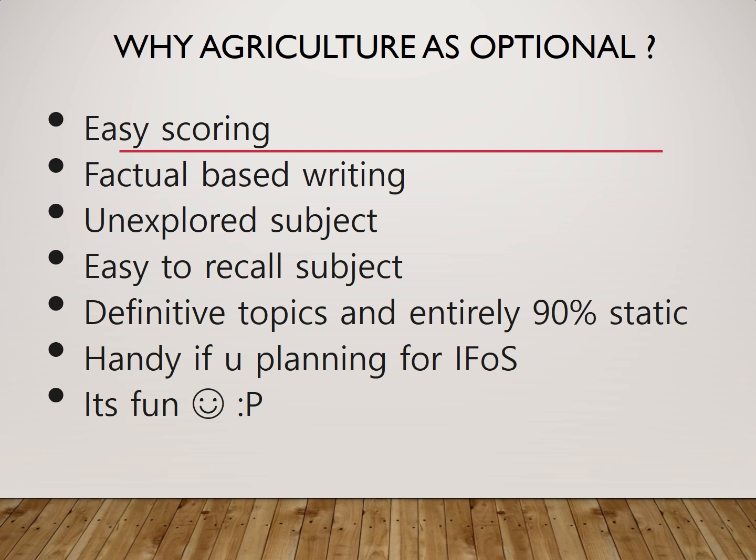If you have any idea why you should choose agriculture as your optional, here are some basic reasons. First and foremost, it is very easy scoring when compared to other subjects like mechanical engineering, EEE, or even humanities-related studies like anthropology and philosophy — all of which need a lot of preparation and analytical work. Agriculture is one of the most easily scoring optionals because it is almost entirely factual and fact-based writing. The topics are very definite and about 90% of the syllabus is static.